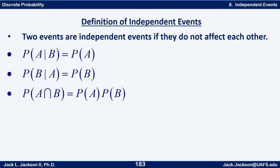I'm going to give you four different ways of defining independent events — any one of these could be considered the definition, and it turns out if any one of them is true, all four are true. Informally, two events are independent if and only if they do not affect each other. If one thing happening doesn't affect the next, that's an independent event. For example, if I flip a coin and then flip it again, the second flip has nothing to do with the outcome of the first flip — those would be independent events.